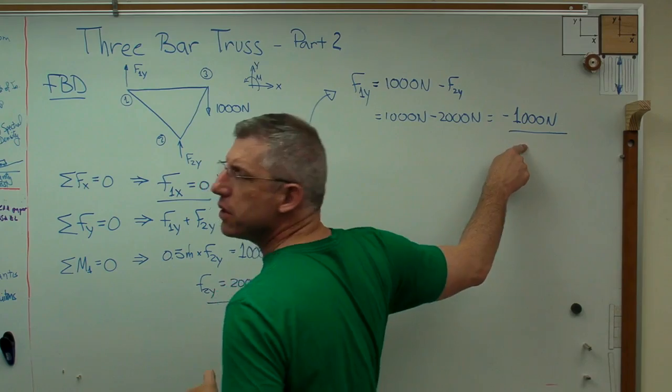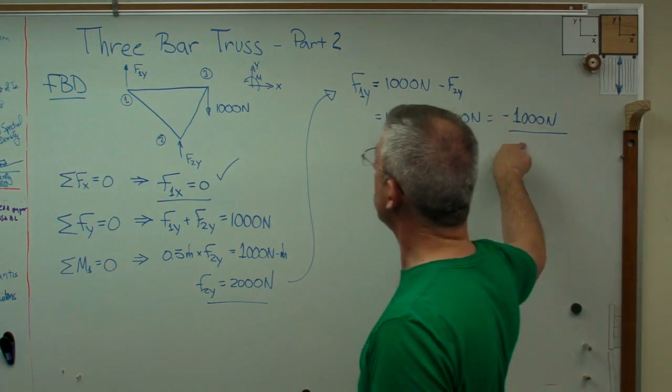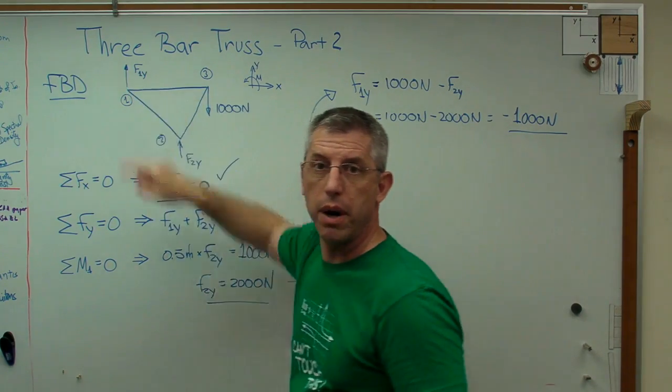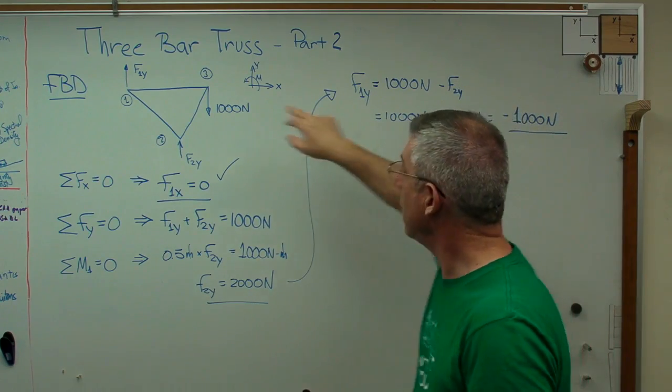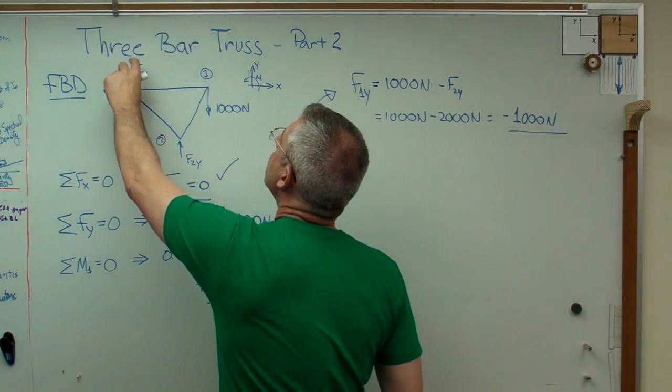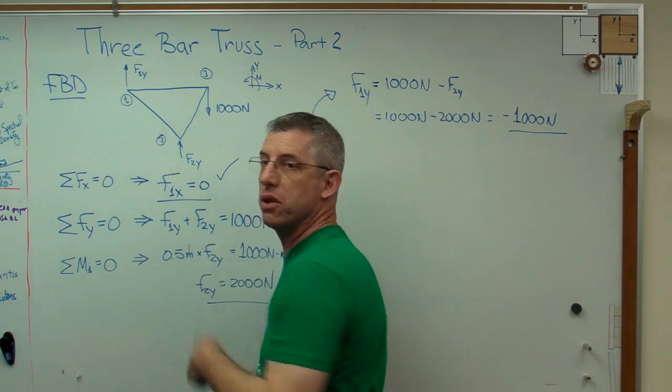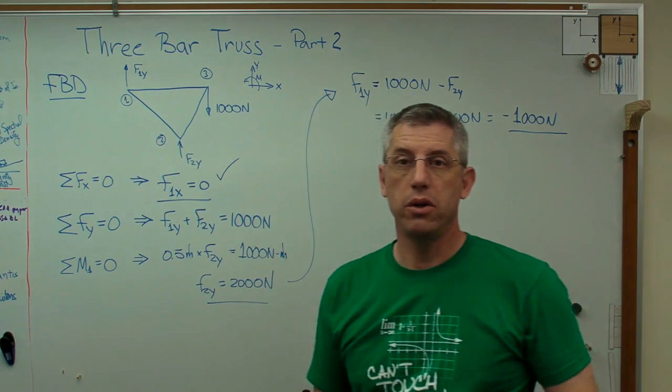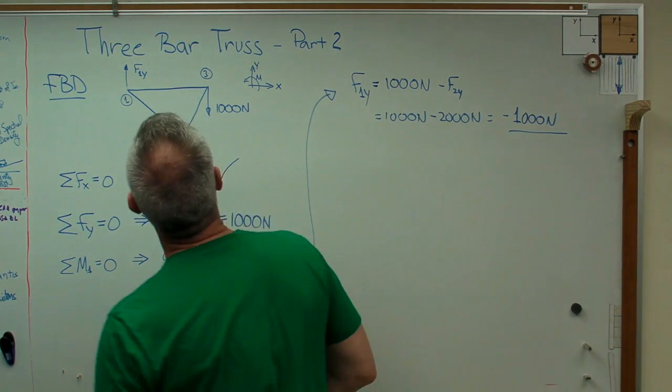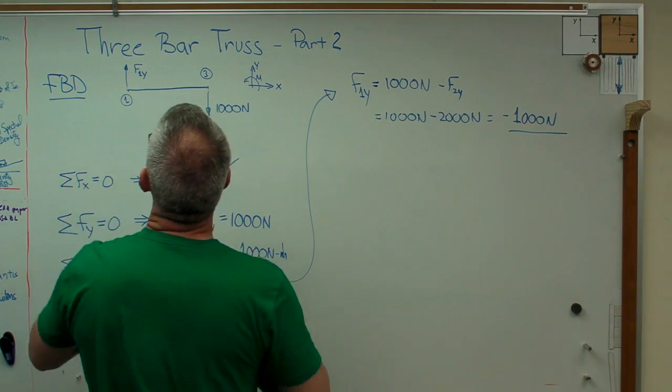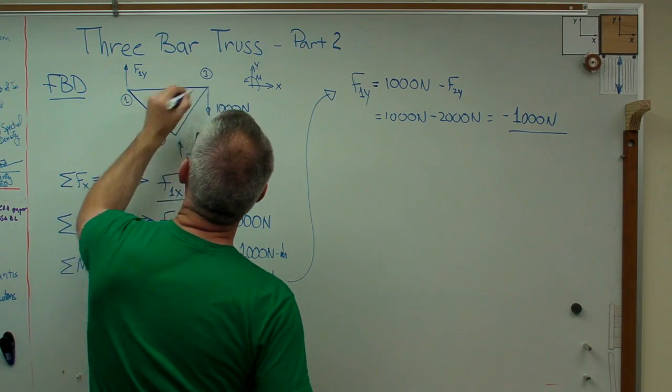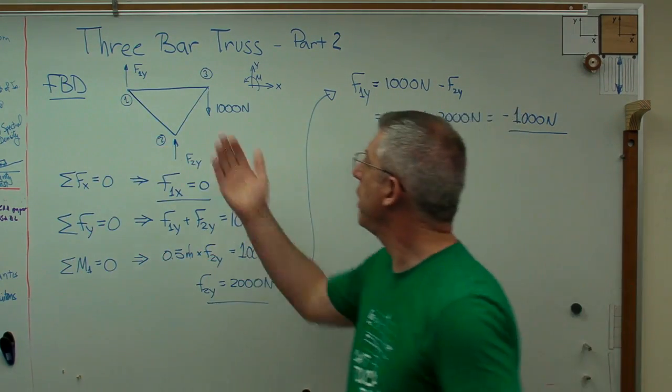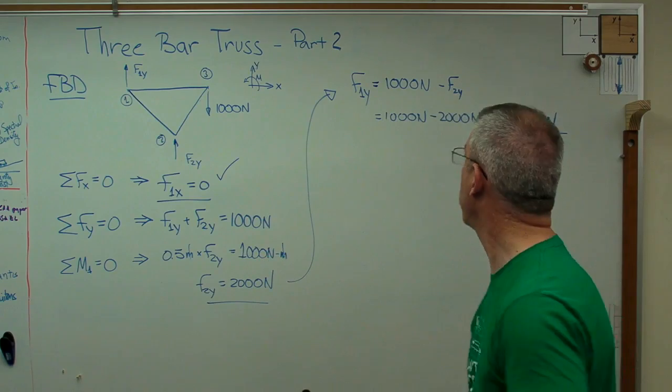I'm going to be one thousand newtons minus f2y. That equals one thousand newtons minus two thousand newtons, which is minus one thousand newtons. There's another intermediate answer. Well, I got a question, though. What does minus one thousand newtons mean? I got a minus sign. Well, all that means is that I didn't know what the sign was, and so I just drew it according to my positive sign convention. All that minus sign means is I guessed wrong. That's okay. So really, it's a thousand newtons negative in that direction. It's really a thousand newtons down, and that makes sense. A thousand newtons down there, a thousand newtons down there, two thousand newtons up in the middle, and this is a symmetric problem.